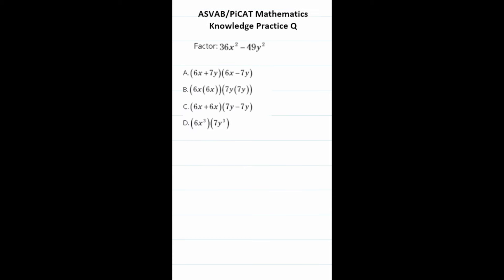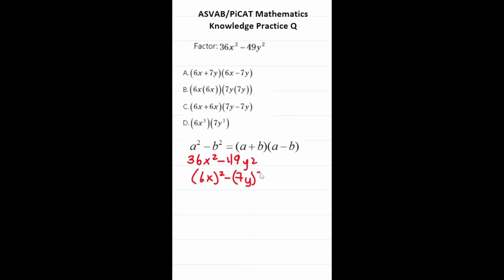This practice question asks us to factor 36x squared minus 49y squared. This is the difference of two perfect squares, and the solution uses the form (a plus b)(a minus b). Rewriting: 36x squared is (6x) squared and 49y squared is (7y) squared. So the factored form is (6x plus 7y)(6x minus 7y), which is answer choice A.